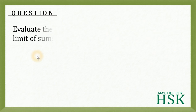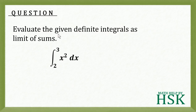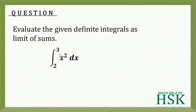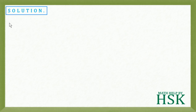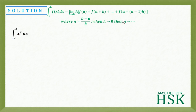Hello friends. The question is to evaluate the given definite integral as the limit of the sum. We have been given this definite integral of x squared dx from 2 to 3. To solve this by applying the concept of definite integral as the limit of sum, first we take the formula and straightaway apply it to this expression.